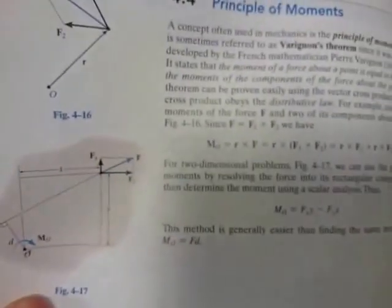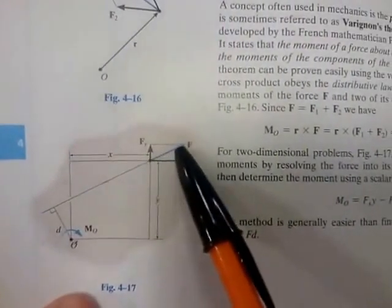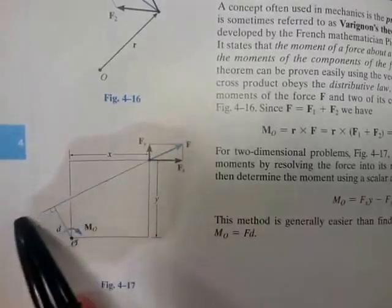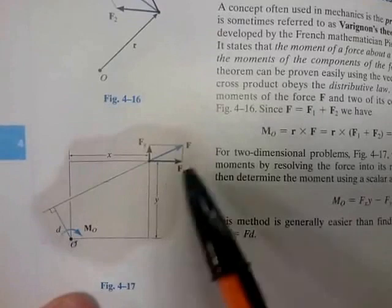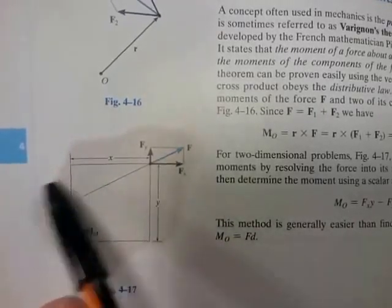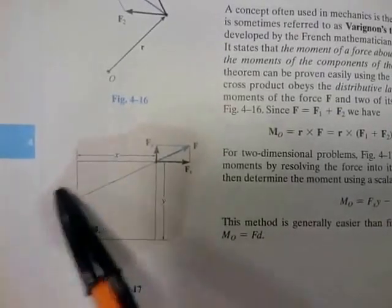So if we take a look here, we've got this force, and if we extend the line of action, there's the moment arm. That force times that distance gives us a clockwise moment. We've discussed this a lot on how to determine this.